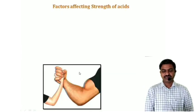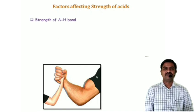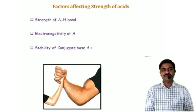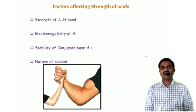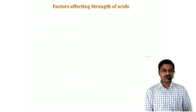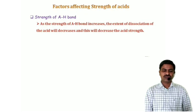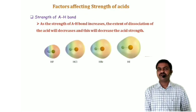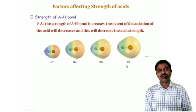The next point is factors affecting the strength of acid. There are four factors: first, the strength of the A–H bond; second, the electronegativity of A; third, the stability of the conjugate base A⁻; and fourth, the nature of the solvent. As the strength of the A–H bond increases, the extent of dissociation of the acid decreases, and this will decrease the acid strength.